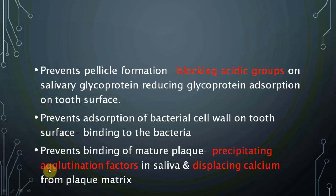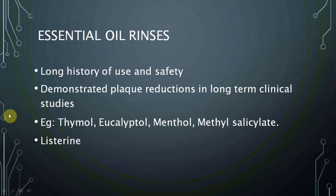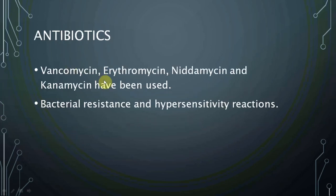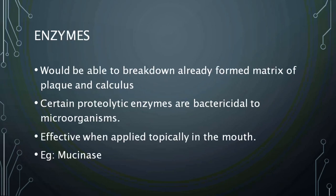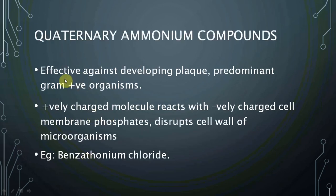Essential oils have a very long history of use and demonstrated safety, with plaque reduction shown in long-term clinical trials. Examples include Listerine, thymol, eucalyptol, and menthol. Antibiotics such as vancomycin and erythromycin can also be used, though bacterial resistance and hypersensitivity are problems. Enzymes are able to break down the already-formed matrix of plaque and calculus; certain proteolytic enzymes such as mucinase are bactericidal to microorganisms.